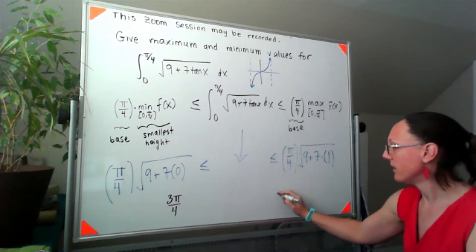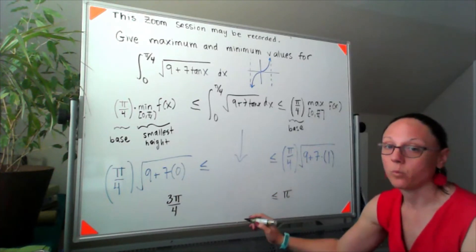Which means our upper bound would be pi.